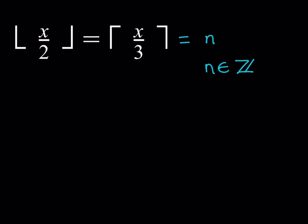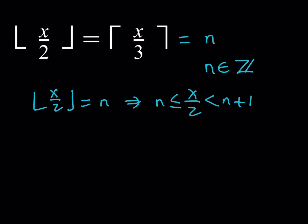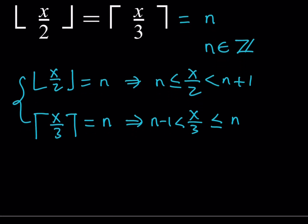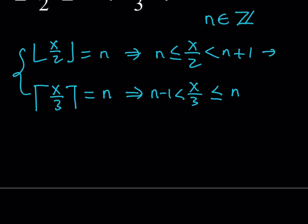Using the floor function part: since the floor of x over 2 equals n, this implies that x over 2 is between n and n plus 1, with equality on the lower side. For the ceiling function, things are a little different — you put n minus 1 on the lower side with no equality, and n on the upper side with equality. This is because if a number is an integer, its floor and ceiling values are the same number.